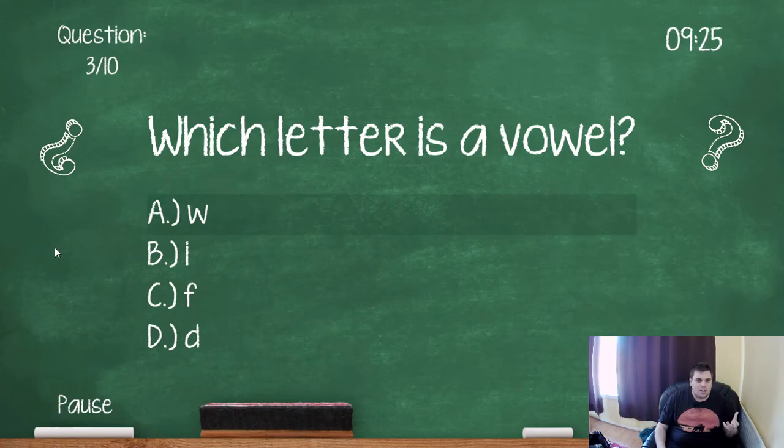Which letter is a vowel? So your vowels are the long sounds that you make. So A, E, I, O, U. And sometimes Y can fit into that category as well, but it's not actually called a vowel. It's a consonant. But in this case, it's going to be I.